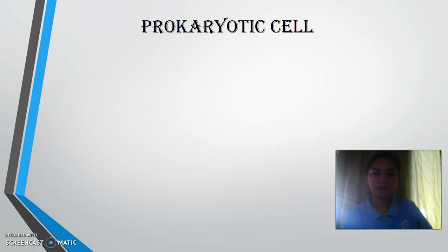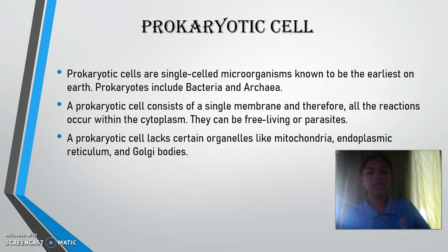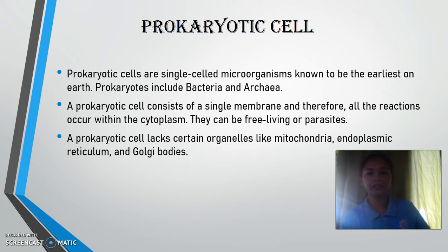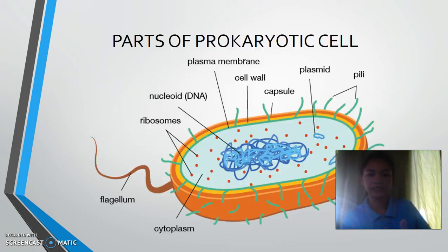The next type of cell is the prokaryotic cell. Prokaryotic cells are single-celled microorganisms known to be the earliest on Earth. Prokaryotes include bacteria and archaea. A prokaryotic cell consists of a single membrane and therefore all reactions occur within the cytoplasm. They can be free-living or parasitic. A prokaryotic cell lacks certain organelles like mitochondria, endoplasmic reticulum, and Golgi bodies.